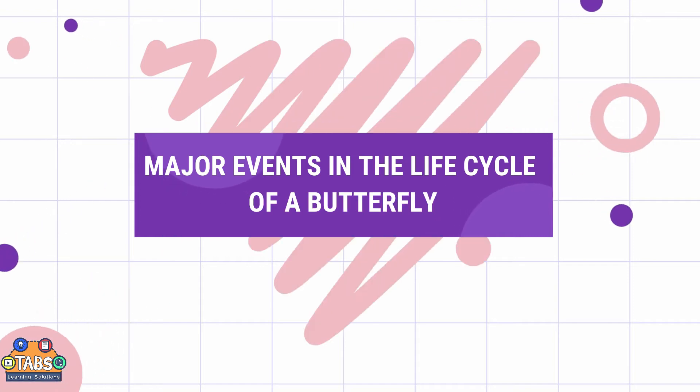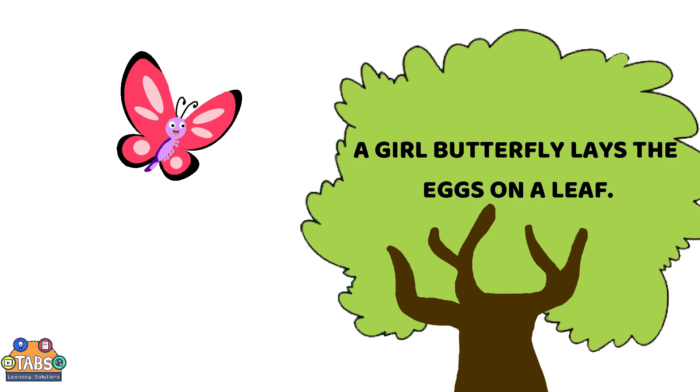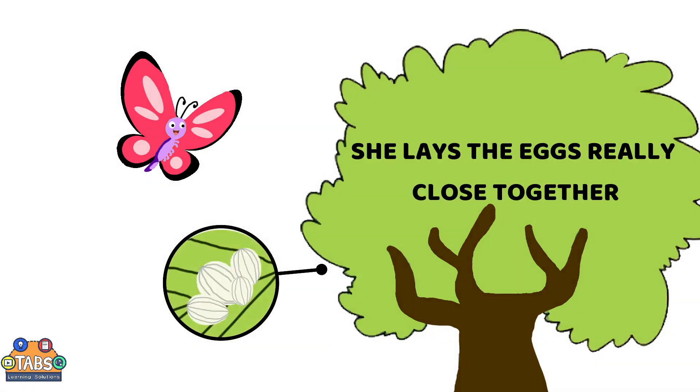Major Events in the Life Cycle of a Butterfly. A girl butterfly lays the eggs on a leaf. She lays the eggs really close together.